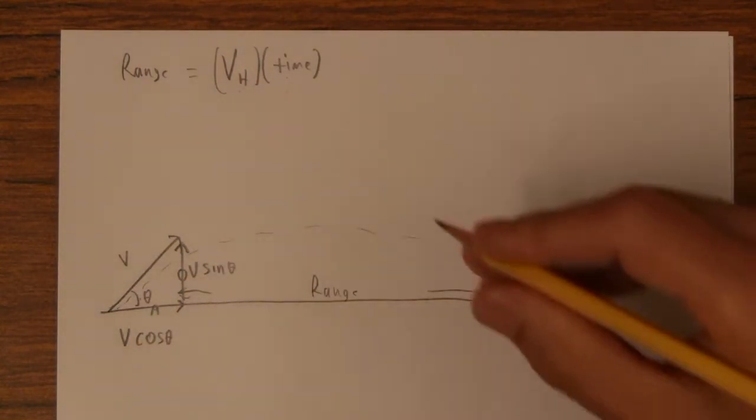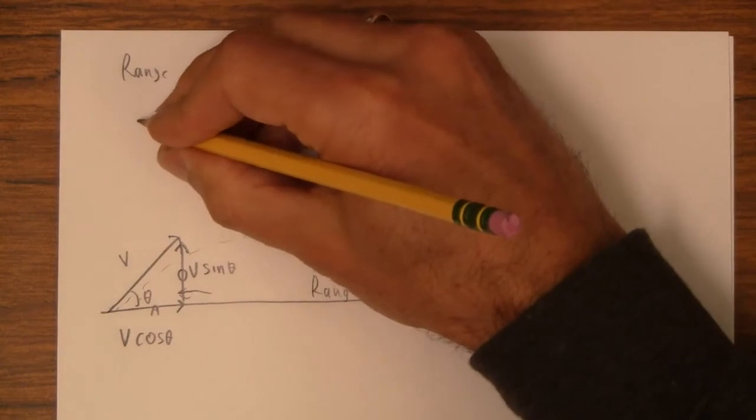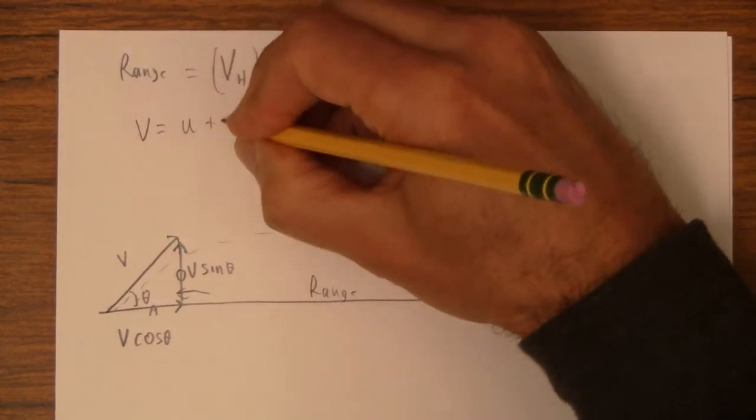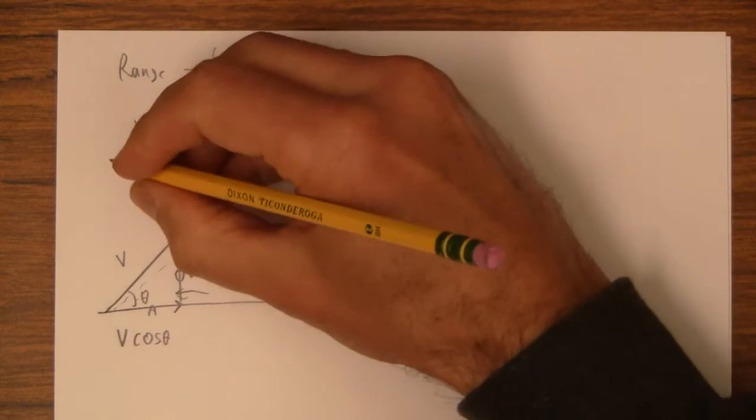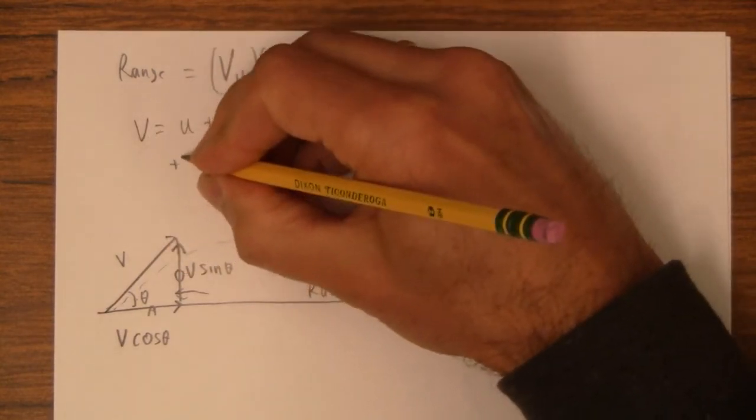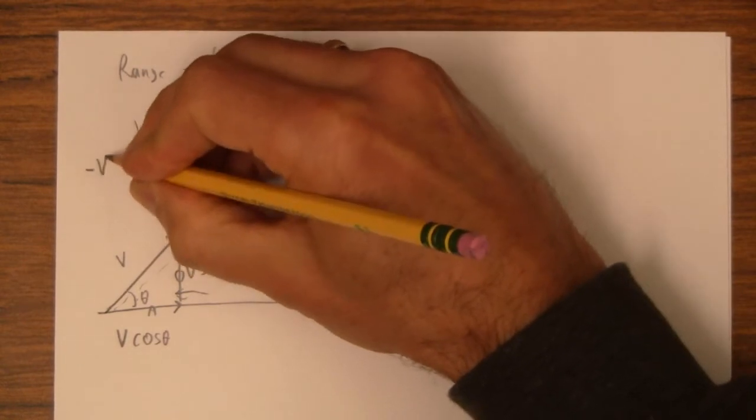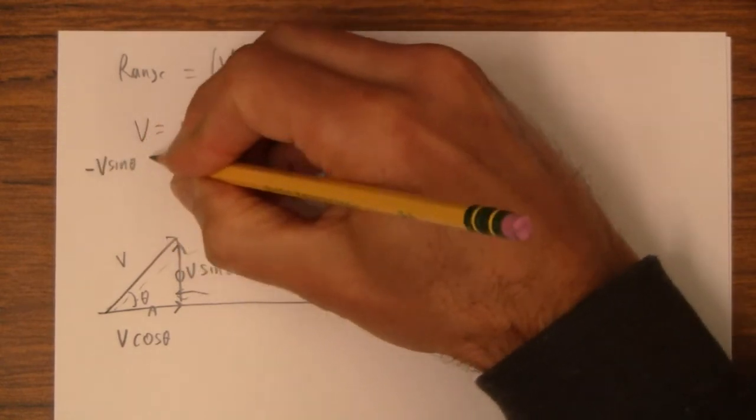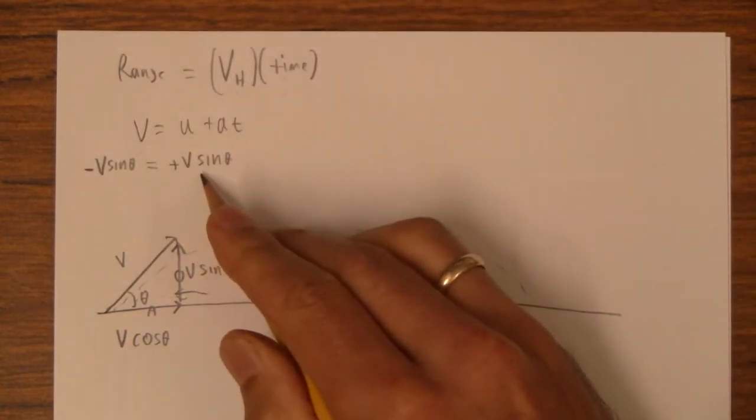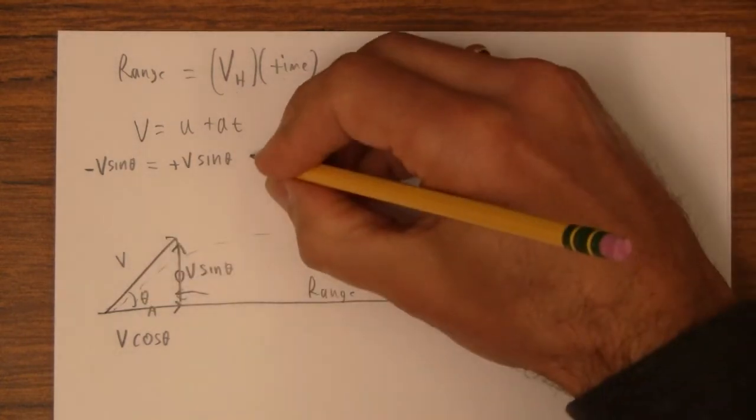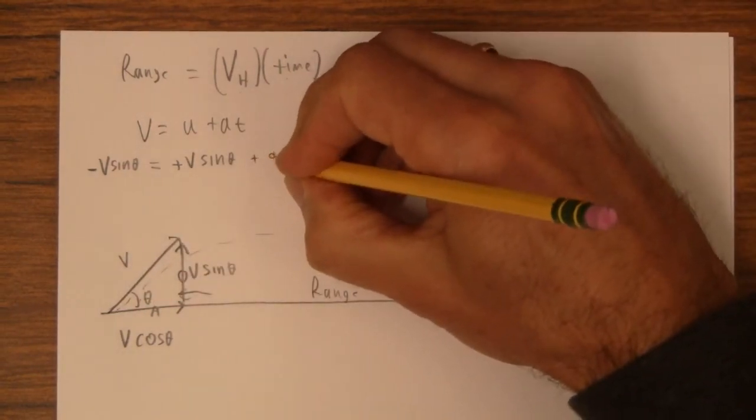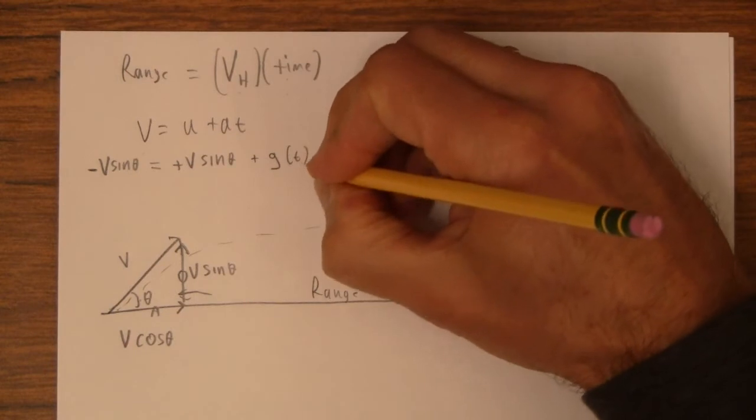Now the initial velocity is going to be, so V equals U plus AT. The initial velocity is positive V sin theta. The final velocity is negative V sin theta because it's level, so it goes up at positive that, down at negative that, plus gravity times time.